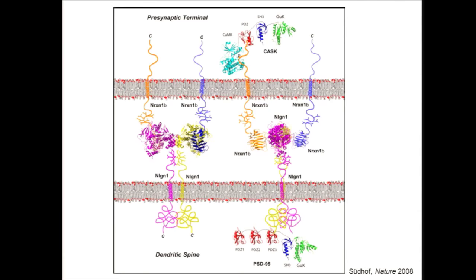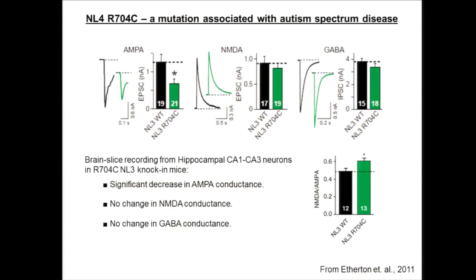Mutations in various members of these gene families have been found in both autism and schizophrenia, raising the intriguing possibility that these neuropsychiatric diseases could have synaptic cellular pathogenesis. Tom Südhof, who works on these systems, had generated a mouse carrying a mutation found in a human autism family — introducing the exact same mutation into the mouse and characterizing the brain using acute brain slices and electrophysiological recordings, as close as you can get to the in vivo situation.